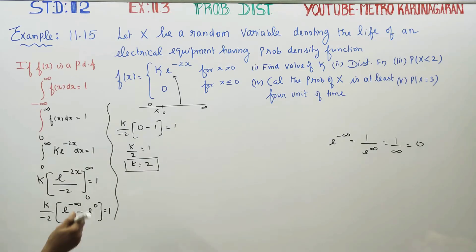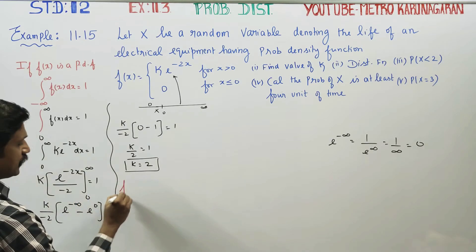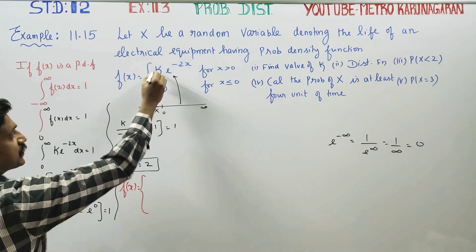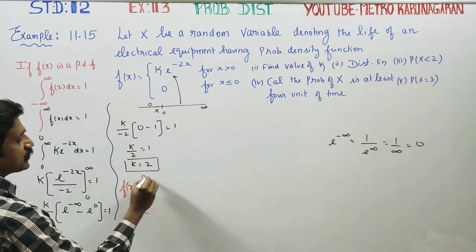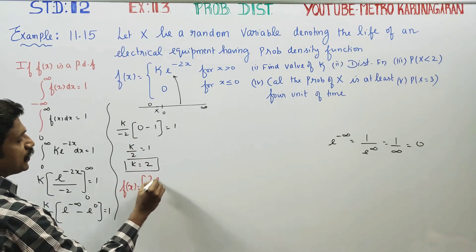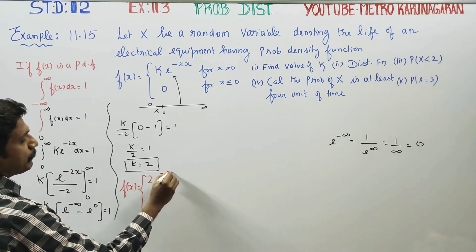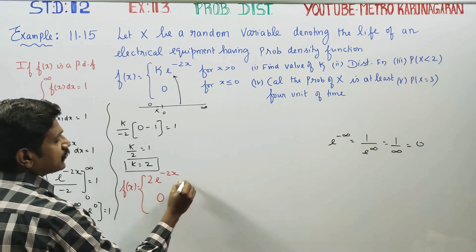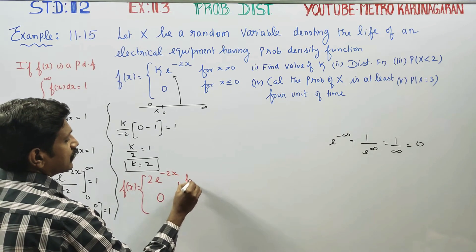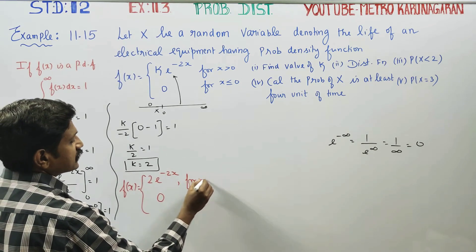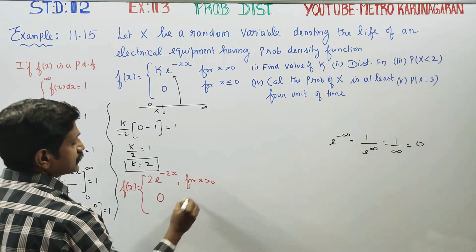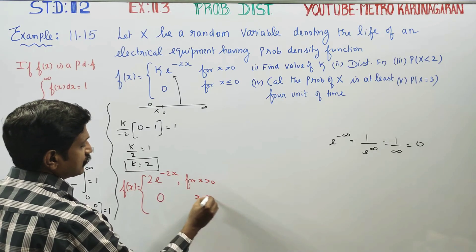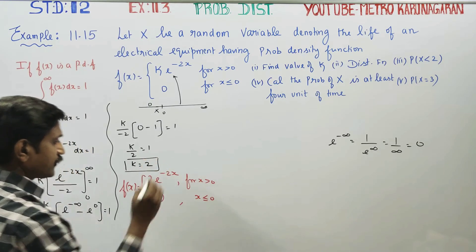We redefine f(x): f(x) equals 2 times e to the power minus 2x for x greater than 0, and 0 for x less than or equal to 0.